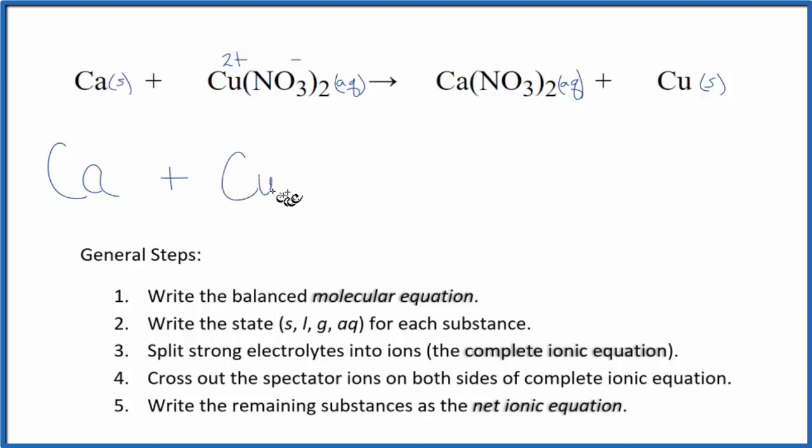So we have Cu 2+ which will be aqueous there, plus we have the nitrate ion, NO3-. This subscript, though, means we have two of them, so we put a coefficient of 2 in front.